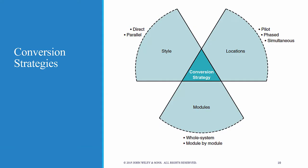Conversion strategies encompass both conversion style, conversion locations, and conversion modules. Conversion style refers to the abruptness of the switch from the old system to the new system. The most abrupt change is termed a direct conversion, which involves an immediate replacement of the old system with the new system — the old system is turned off on one day and the new system is turned on the next. Direct conversion is simple and straightforward, but it is also risky, as problems not detected during testing can seriously disrupt the organization's ability to function.